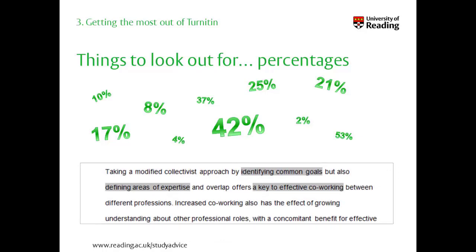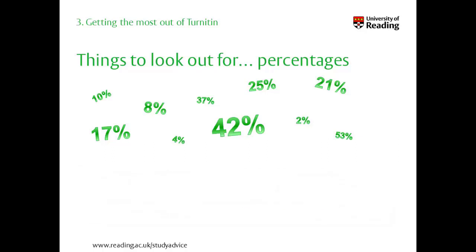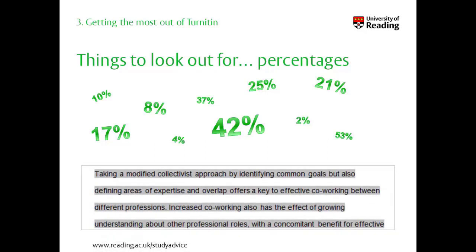Or you may have a much lower percentage, but the one thing that Turnitin is picking up is a big error that could have serious consequences — perhaps a whole chunk of text without it being marked up or given a citation. Whatever the percentage is, you still need to go through the report and check the results against your work.